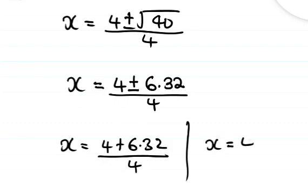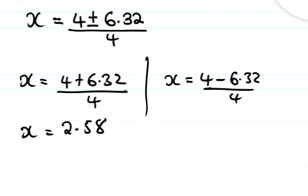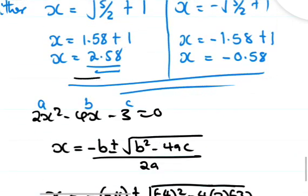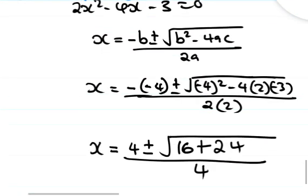So x equals 4 plus 6.32 over 4, giving 10.32 over 4, which is approximately 2.58. Or x equals 4 minus 6.32 over 4, giving negative 2.32 over 4, which is approximately negative 0.58. Both methods give the same answers, confirming our solution. That's how you solve it.